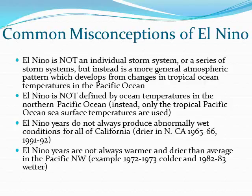El Niño years are not always warmer and drier than average in the Pacific Northwest. A good example of this is 1972-73, which was colder, and 1982-83, which was wetter than average.